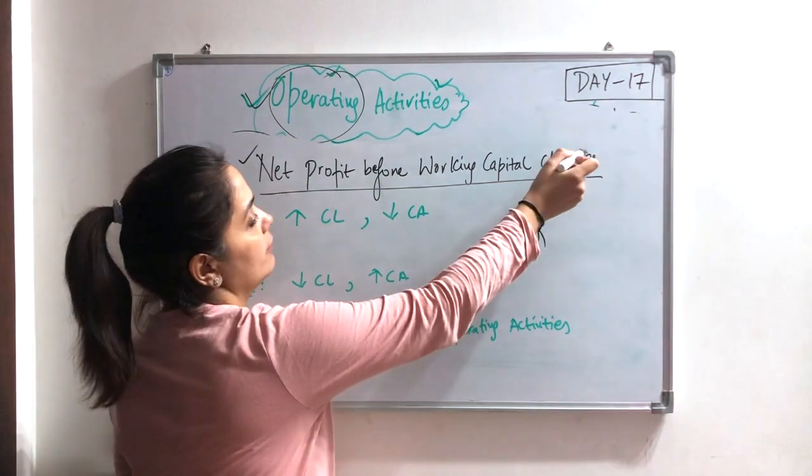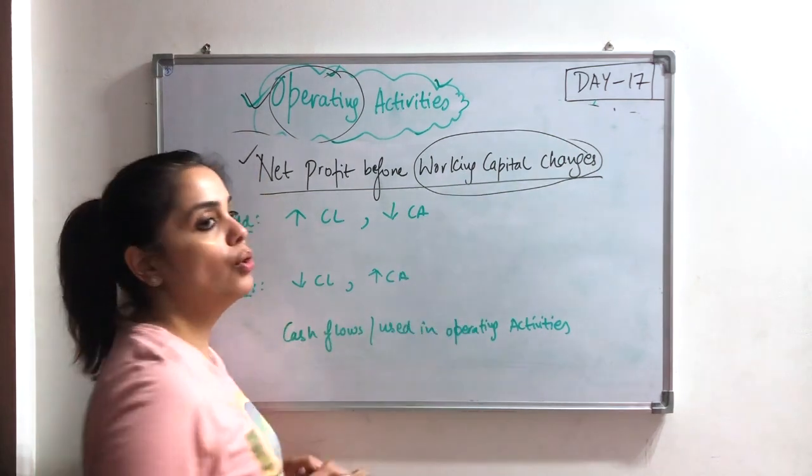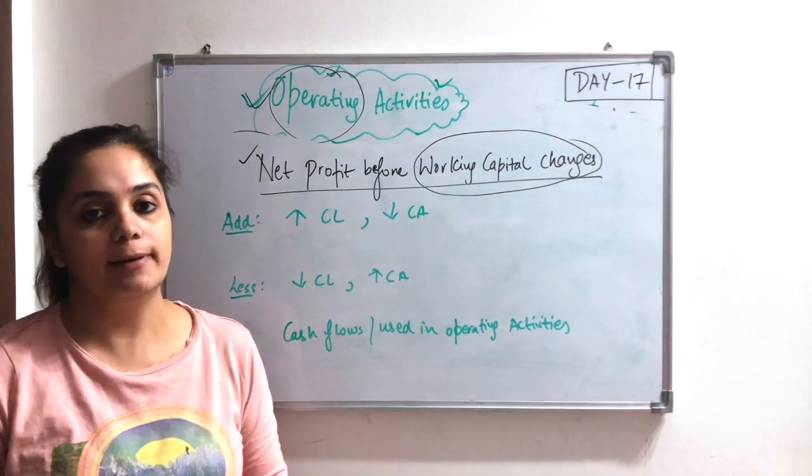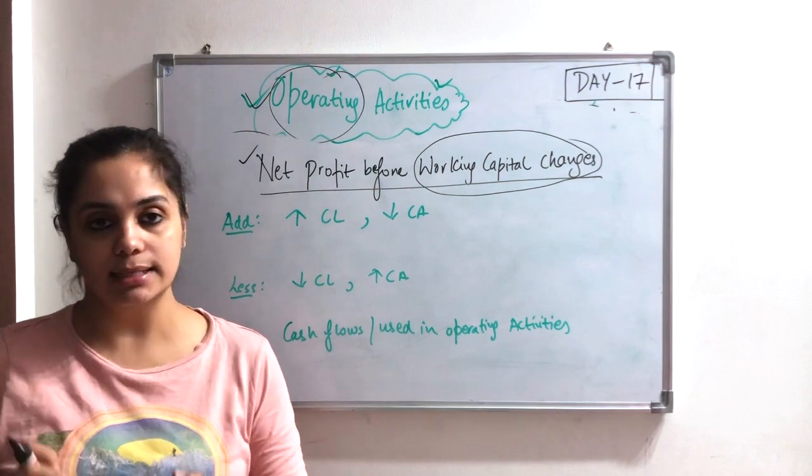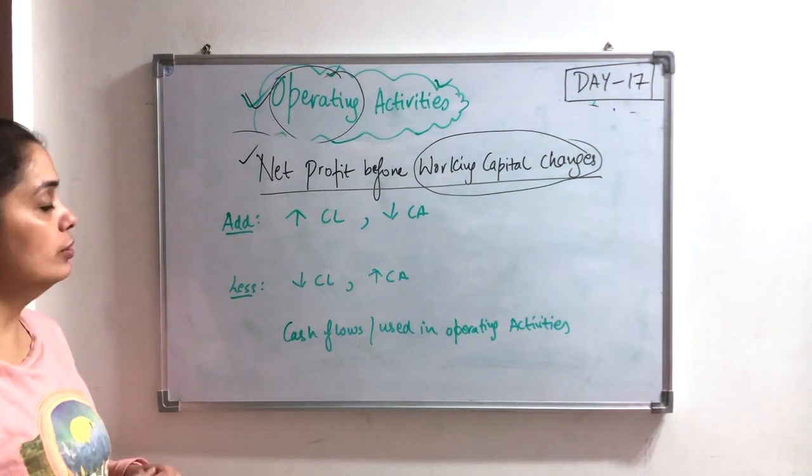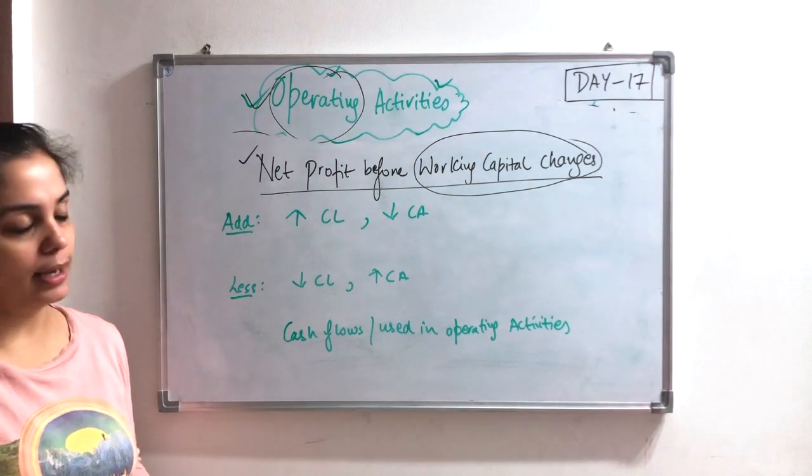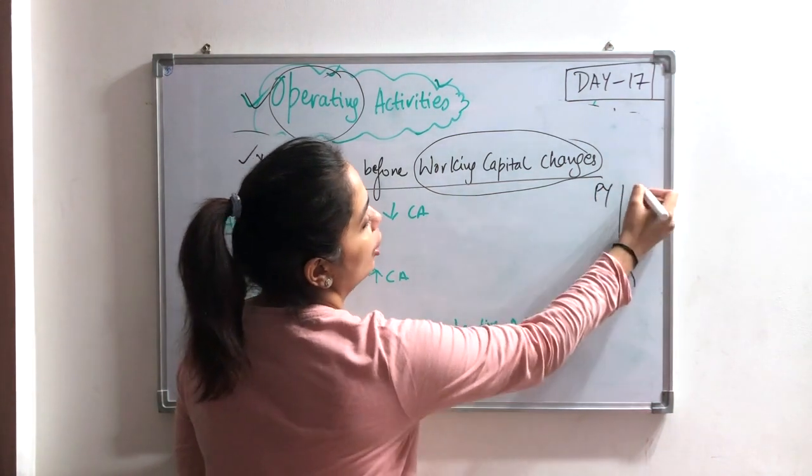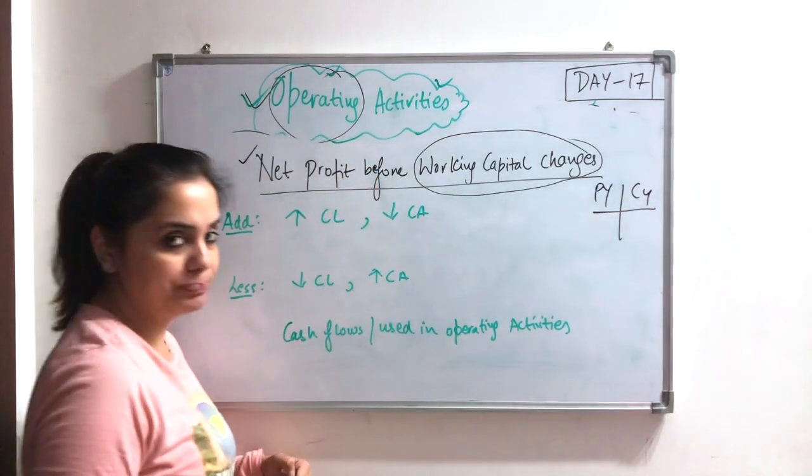Now, in this net profit, there are also changes in working capital. What is our current assets minus current liabilities? So what way do we do? We have in balance sheet information from previous year and current year.